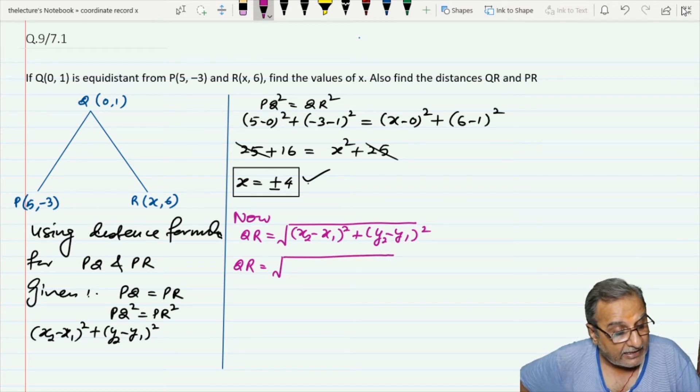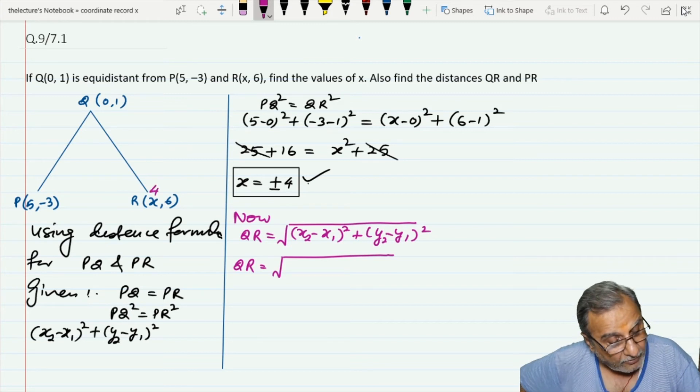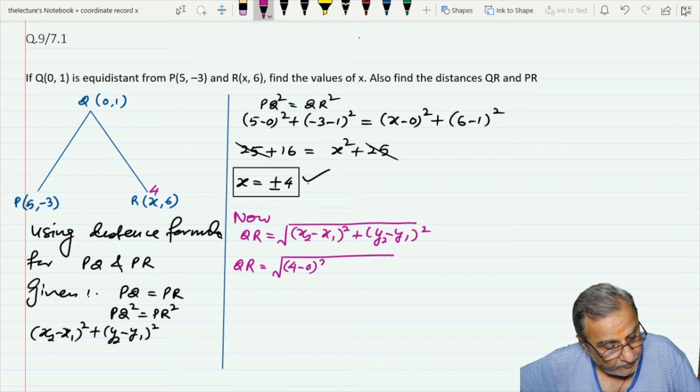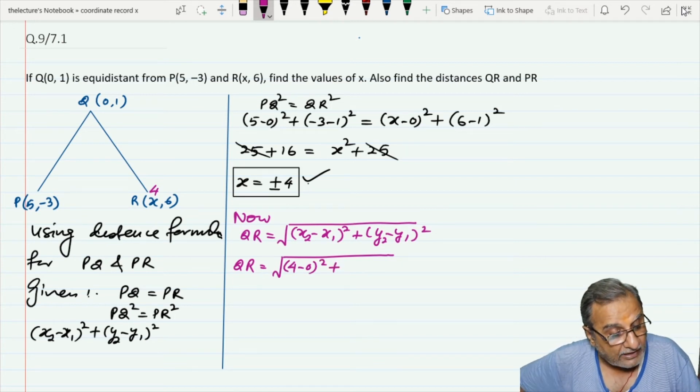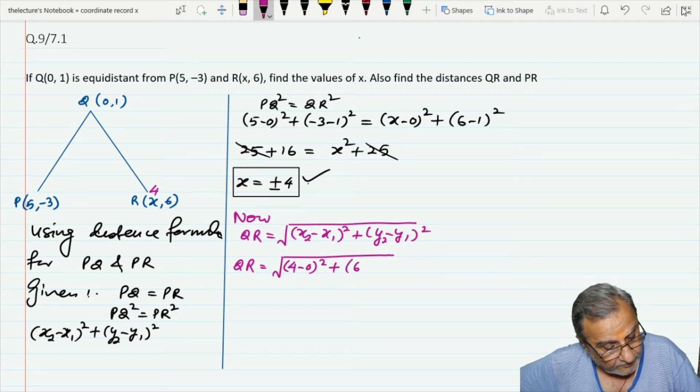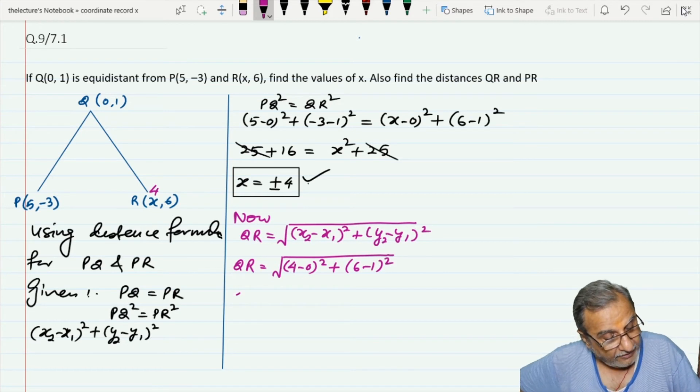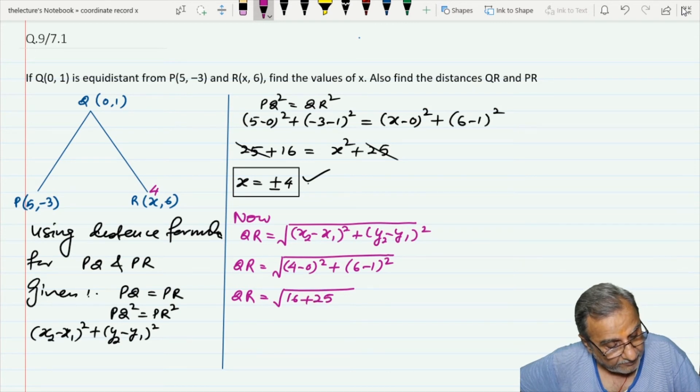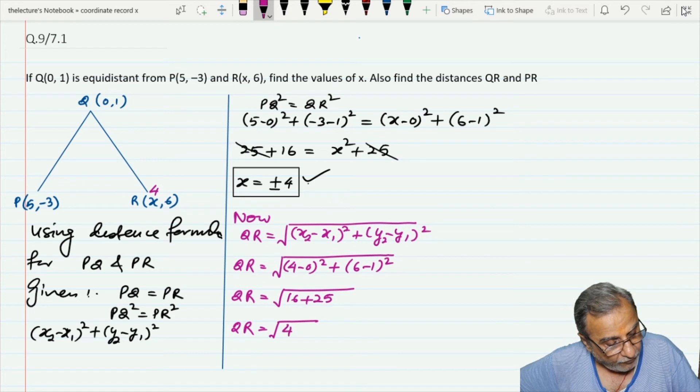QR equals, with x = 4 now, (4-0)² + (6-1)². So QR = √(16 + 25) = √41 units.